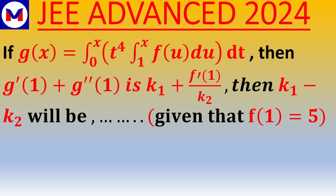Hello, welcome to the channel. The next problem of the series is: if g(x) equals the integral from 0 to x of t^4 times the integral from 1 to x of f(u) du, dt, then g'(1) plus g''(1) is k1 plus f'(1) divided by k2. Then k1 minus k2 will be — given that f(1) equals 5.